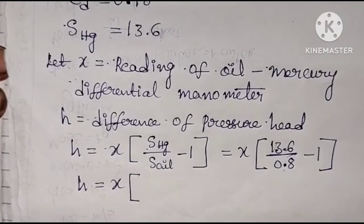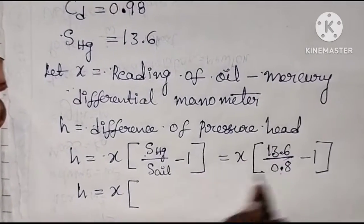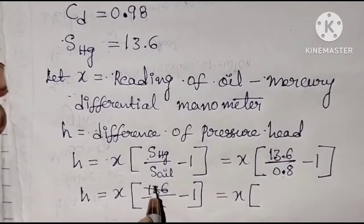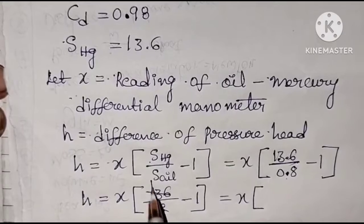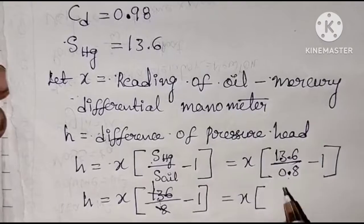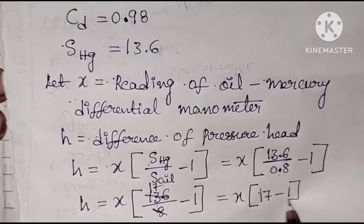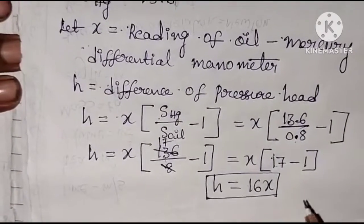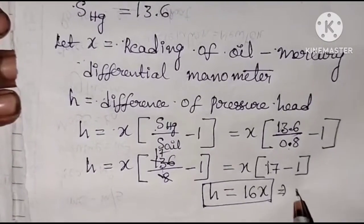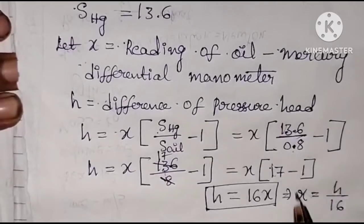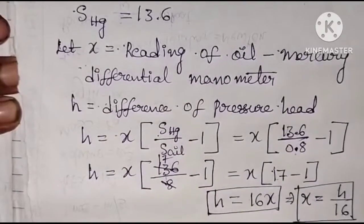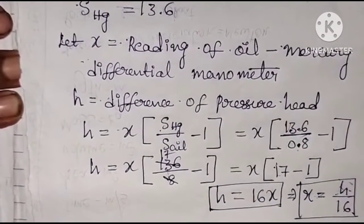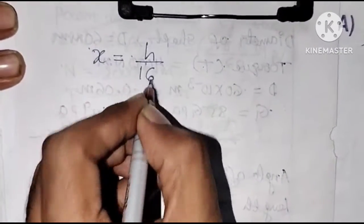To calculate 13.6 by 0.8, remove the decimal to get 136 by 8, which gives 17. So 17 minus 1 equals 16. Therefore h equals 16x. From this relation, x equals h by 16. To find the reading of the oil-mercury differential manometer, we need to find the value of h, the difference of pressure head, using the discharge formula.